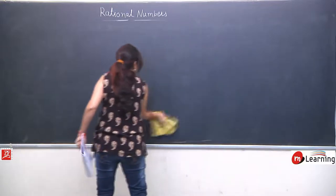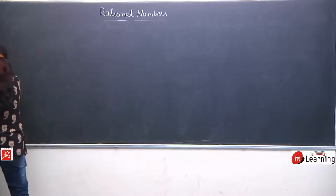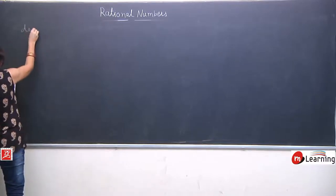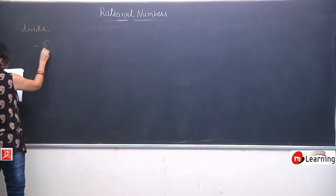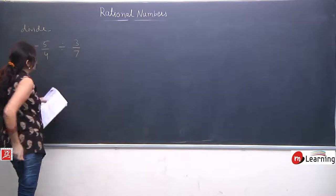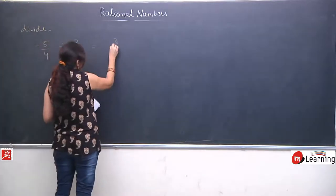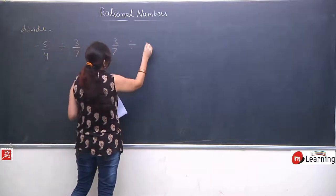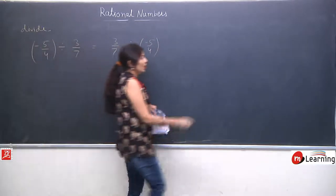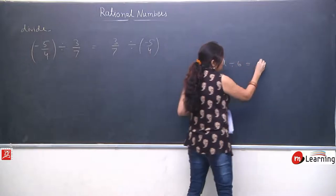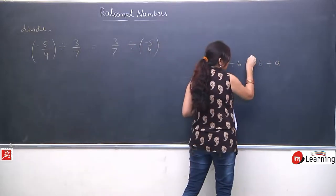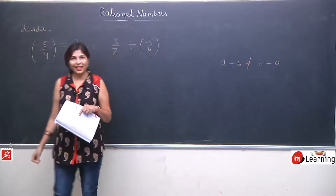Dono ke answers different aayenge, but still hum check karke khud proof karke dekhenge ki it is applicable or not. Question hai: minus 5 upon 4 divided by 3 upon 7. Sabse pehle commutative law apply karke dekhna hai, to hum question ko is tarah likhenge — terms ko exchange kar diya, like a divided by b tha aur humne b divided by a kar diya. Ab hum check karenge whether they give equal or not equal answers.